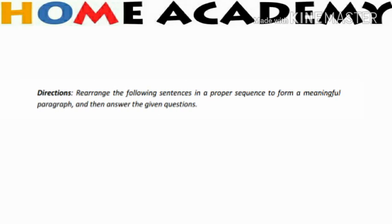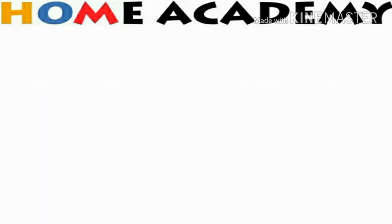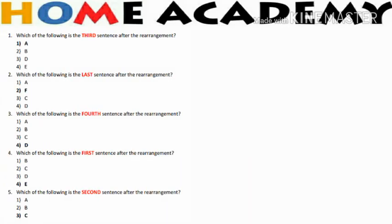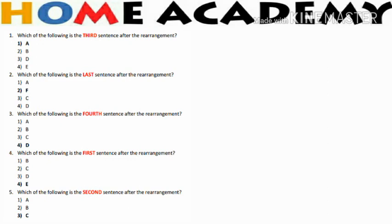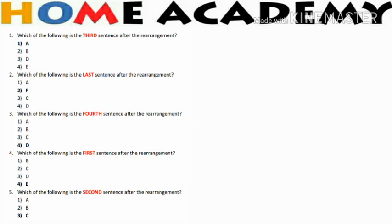The main objective in Parajumbles is to rearrange the sentences to form a meaningful paragraph, and then we have to answer the questions which are asked. Questions may be like: which of the following is the first sentence, last sentence, fourth sentence, fifth sentence, etc., after the rearrangement.